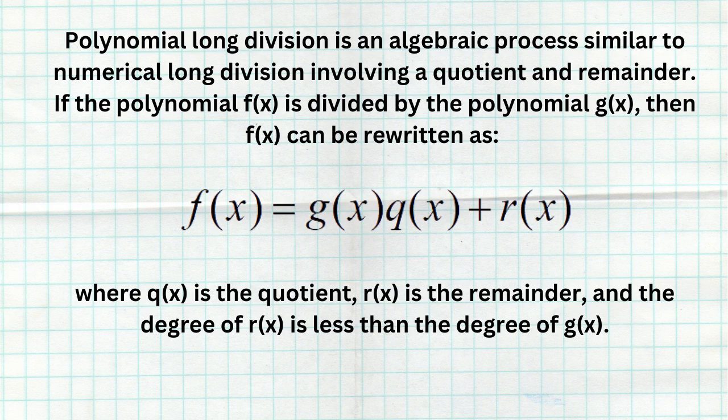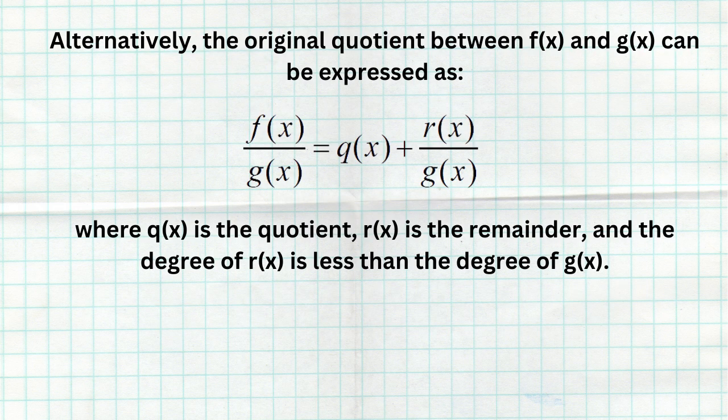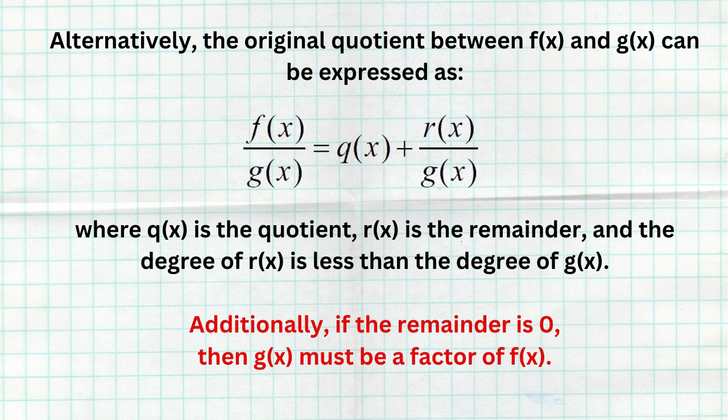Polynomial long division is an algebraic process similar to numerical long division involving a quotient and a remainder. If f(x) is divided by g(x), then f(x) can be written as g(x)·q(x) + r(x). Alternatively, f(x)/g(x) = q(x) + r(x)/g(x). If the remainder is zero, then g(x) must be a factor of f(x), meaning g(x) goes into f(x) evenly, so q(x) · g(x) equals f(x) directly.